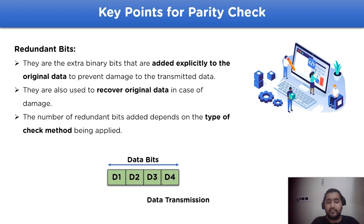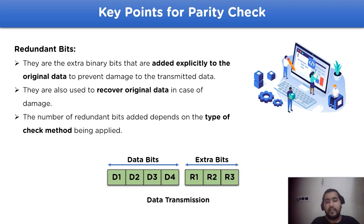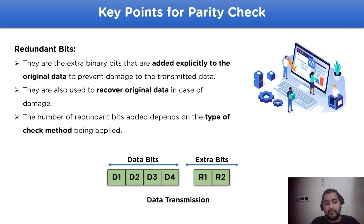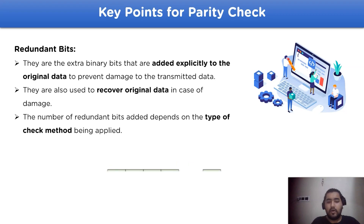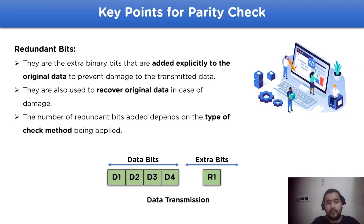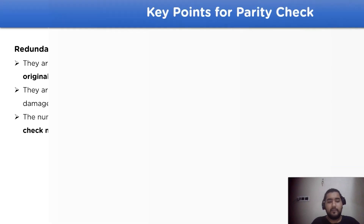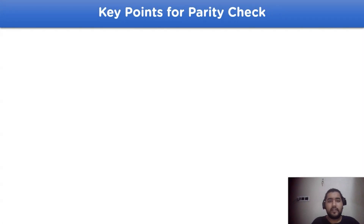For example, there are four data bits used whereas three redundant bits in some methods. It can also be two or one redundant bit. In the case of the parity check method, only one redundant bit is added to the original data.